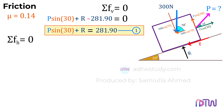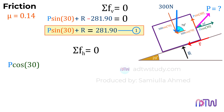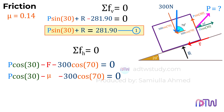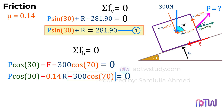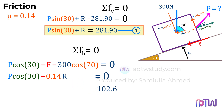Next, let's sum the horizontal forces. Forces acting left are considered negative, and forces acting right are considered positive. Therefore, we have positive P cosine 30 degrees, since it is acting right. Next, minus F, the frictional force, acting left, and minus 300 cosine 70 degrees, acting left. We will equate all these forces to zero. Since we know the frictional force is given by mu times the reaction force R, we substitute the value of mu and R to get the second equation. Here, minus 300 cosine 70 degrees equals minus 102.6 newtons. By rearranging, we get our second equation.